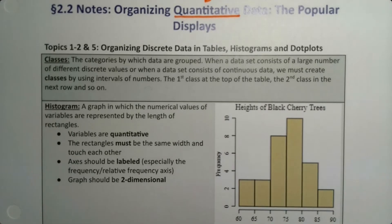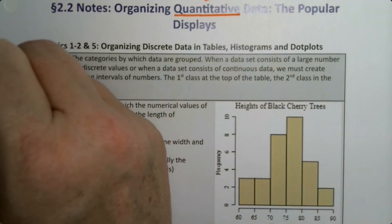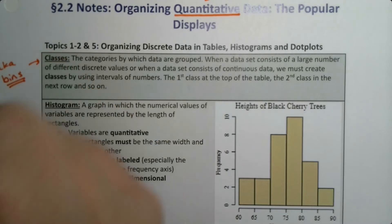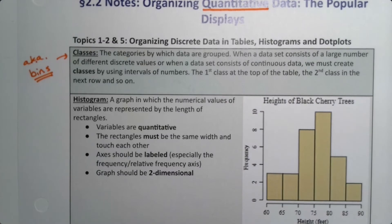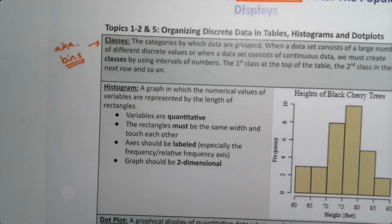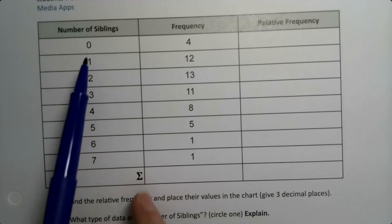First of all, classes — classes are the categories by which data are grouped. They're also known as bins, the bins that we put things in. When a data set consists of a large number of different discrete values or continuous values, we create these classes. The first class is at the top of the table, the second class is the second row, and so on. So the first class is zero, the second class is one, and so on — these are the bins that we're putting people into.